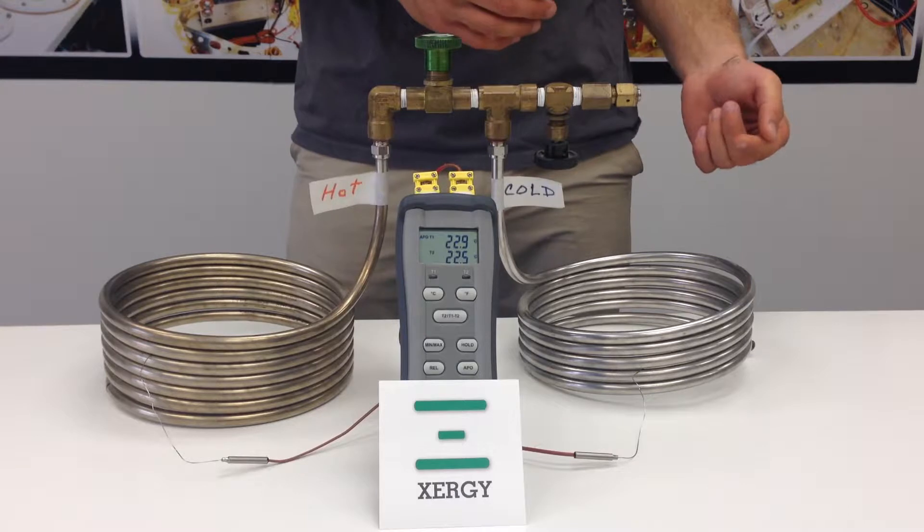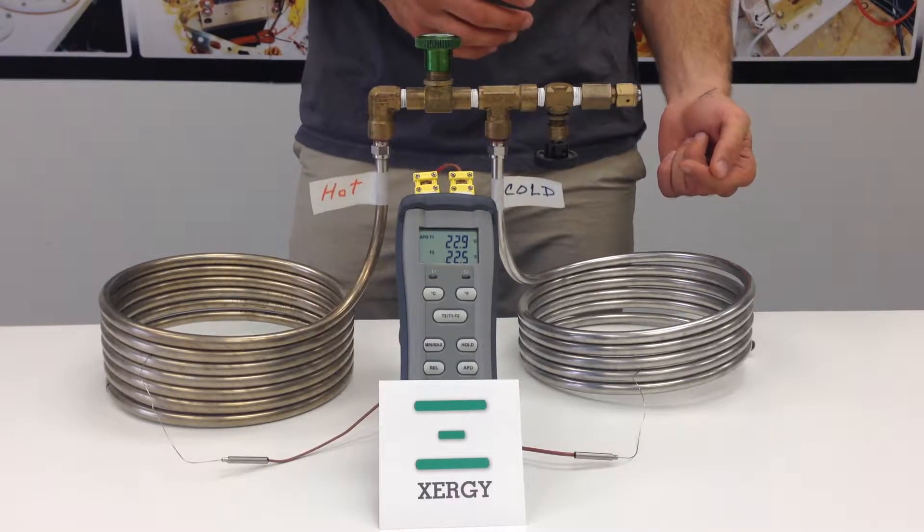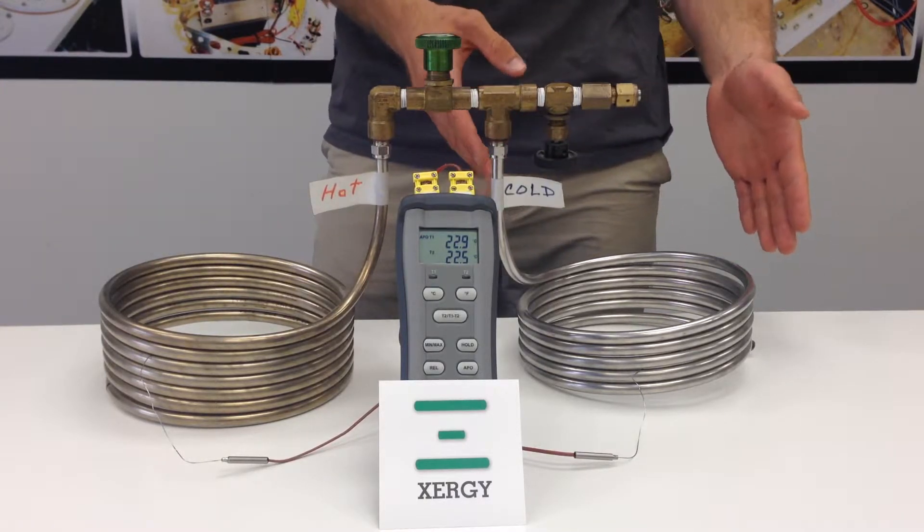Conversely, as hydrogen leaves the high pressure side, it creates an endothermic reaction and this coil will become cold.